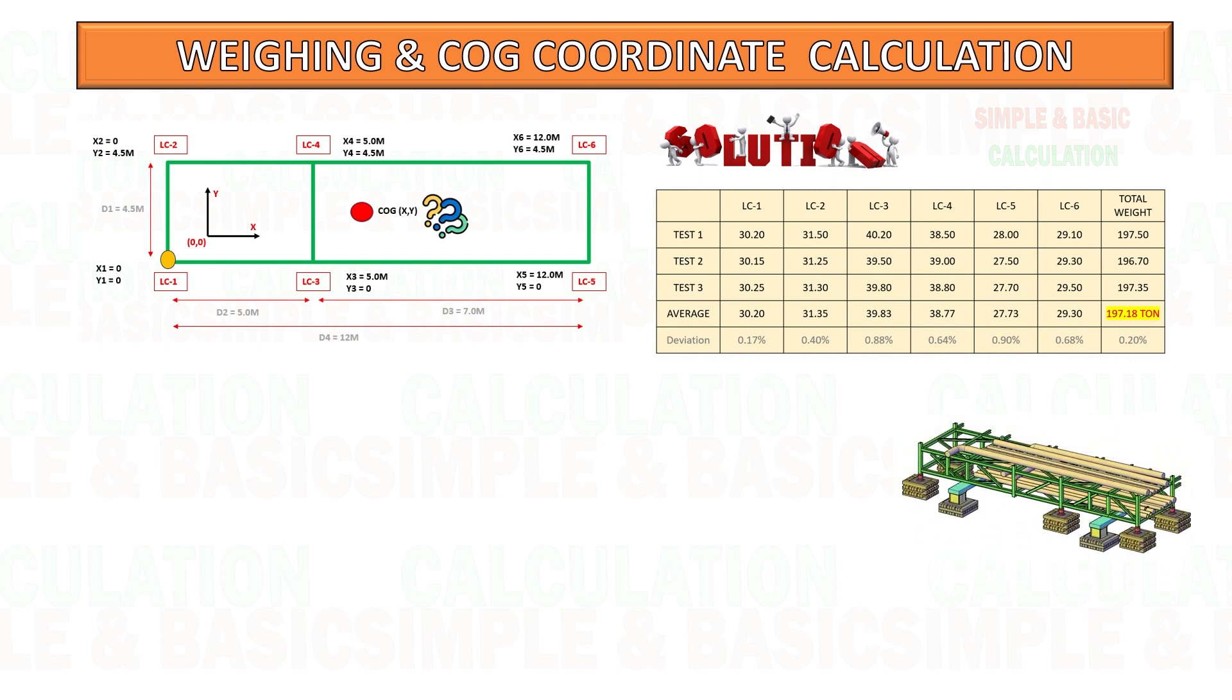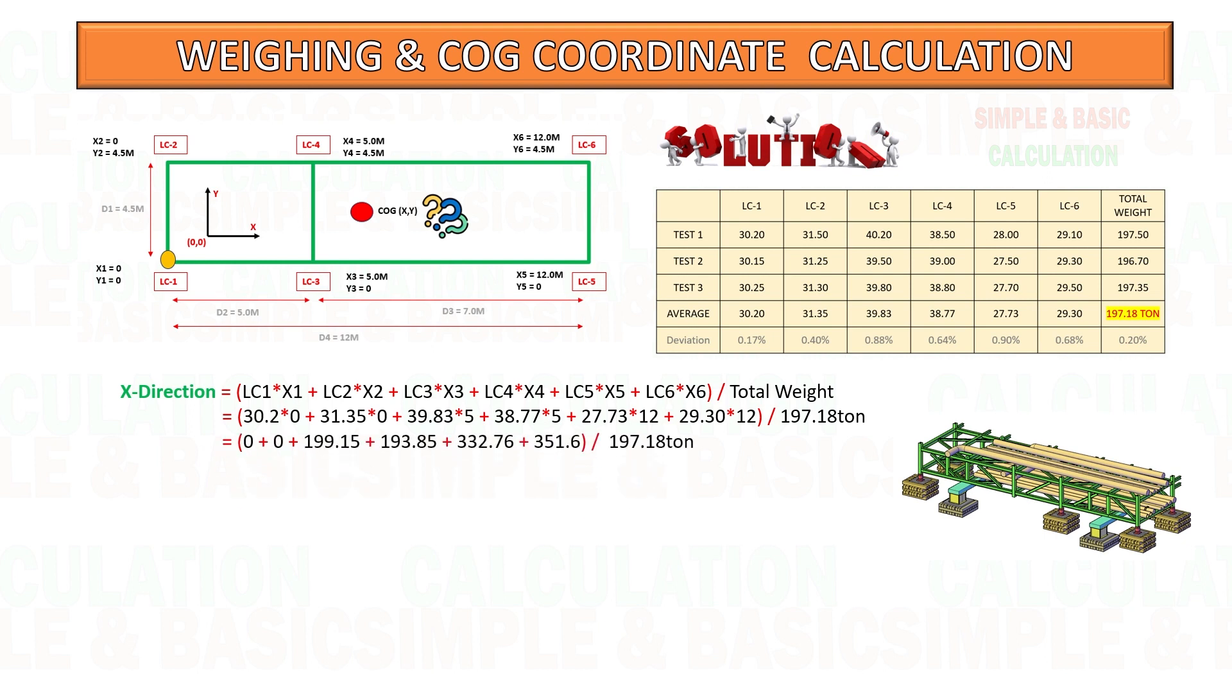Based on the formula given, start to substitute the given data into the formula. Each coordinate for x and y direction will be multiplied by the average value for each load cell and divided by the total weight of the cargo. You can pause the video and try to follow the calculation.